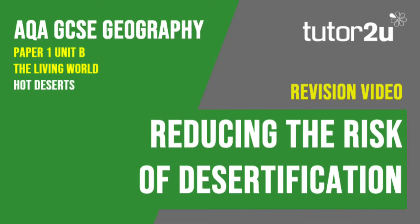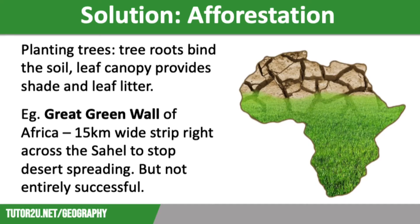Welcome to this Tutor to You revision video that looks at the different strategies that can be used to reduce the risk of desertification. This is part of Paper 1, Unit B, The Living World. There are several different ways to reduce the risk of desertification in semi-arid areas such as the Sahel in Northern Africa.